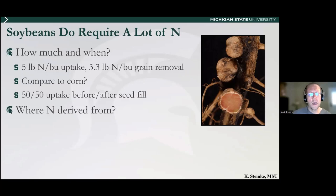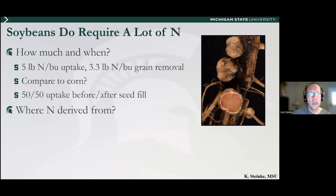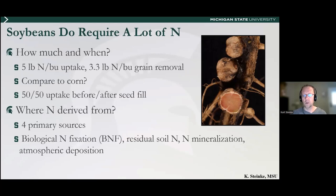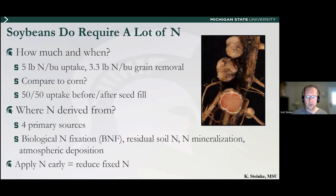Where does that N come from? There are four primary sources: biological nitrogen fixation, residual soil N, mineralization from organic matter or residue over the growing season, and atmospheric deposition. If you apply N early, we reduce the amount of fixed N, which in the big picture of production agriculture reduces the sustainability of soybean production. That's something we want to discuss more this morning.